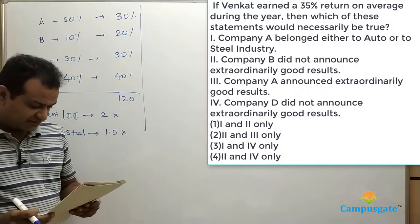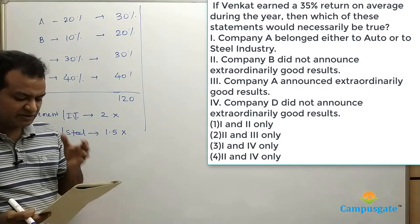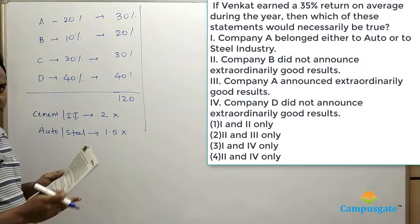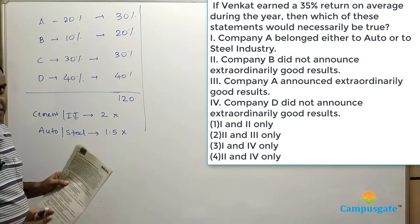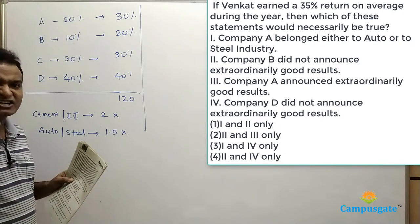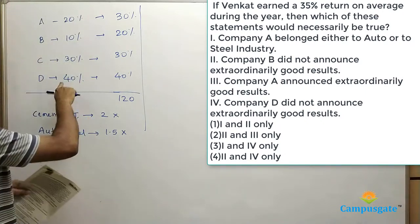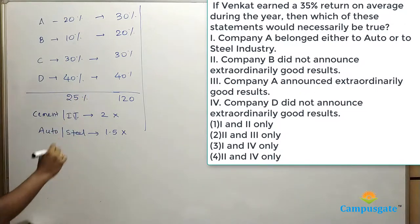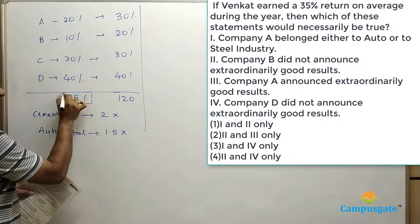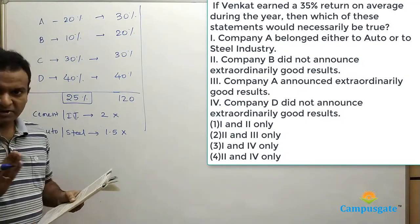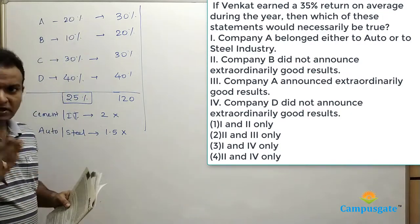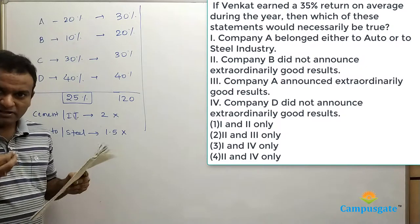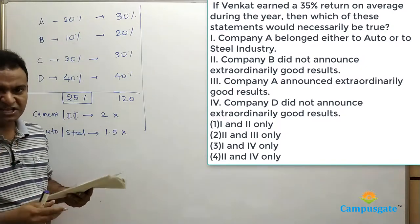Next question: Venkat earned 35% return on average during the year. Which of the following statements would necessarily be true? Without any extraordinary good results, the minimum return is 40 + 30 + 20 + 10 = 100, divided by 4 equals 25%. To achieve 35% return, each share on average must give 10% extra, meaning 40% total extra is needed from the extraordinary results.